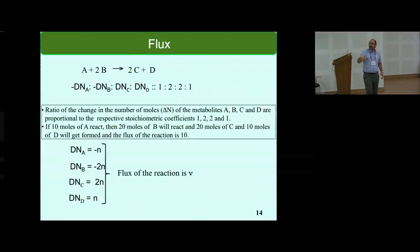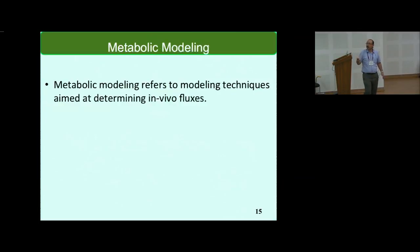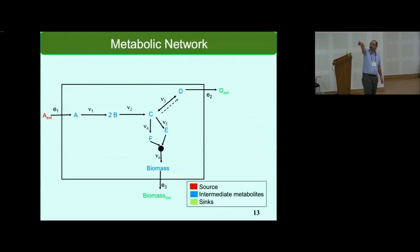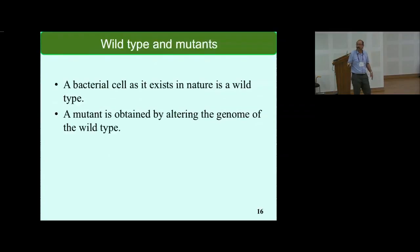Now we come to the concept of flux. Flux is, if I have this particular reaction and the flux of the reaction is 10, that means 10 moles of A are getting consumed, 20 moles of B is getting consumed, 20 moles of C is getting produced and 10 moles of D are getting produced. Metabolic modeling is a technique by which we find in vivo fluxes, which means we want to find the values of these fluxes as they occur in a living cell. There's a living cell in which metabolism is going on and we want to find what the flux values are.